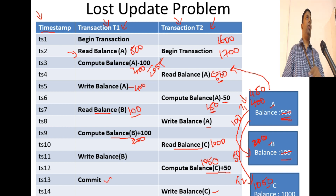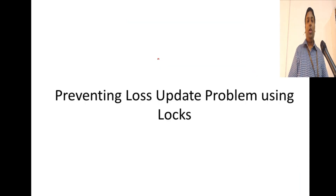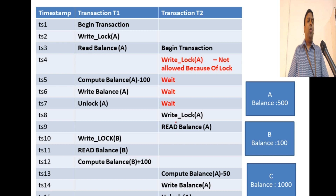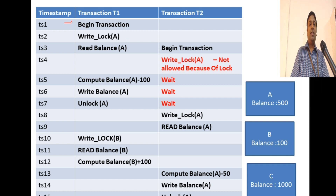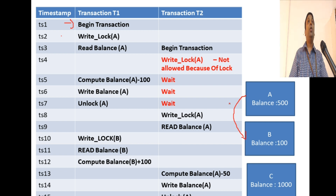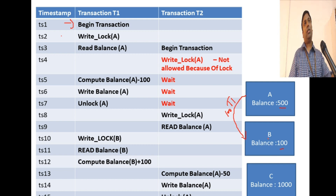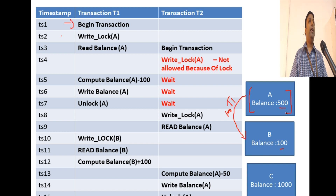How do we fix this? We have talked about locks. We can use locks to prevent the lost update problem. Let me explain how. Transaction T1 is going to transfer 100 rupees from account A to account B. Since it is changing A and B, it should issue write locks. First, it issues a write lock on A. Since no one else has acquired a write lock, the write lock is achieved, and it reads balance of A as 500.